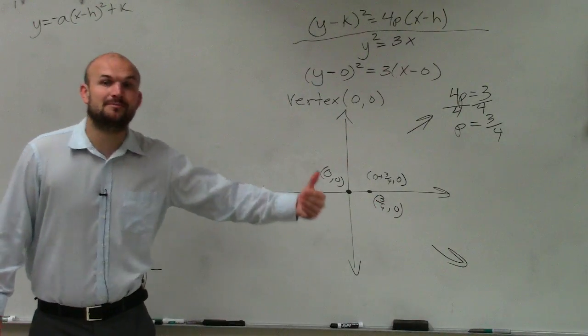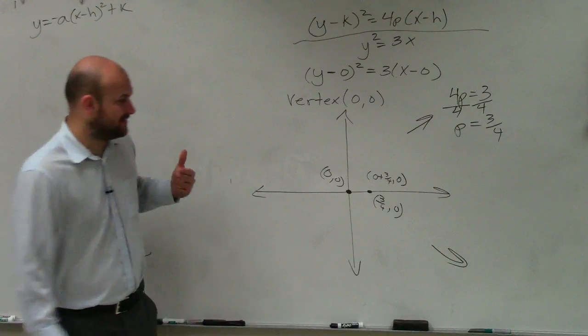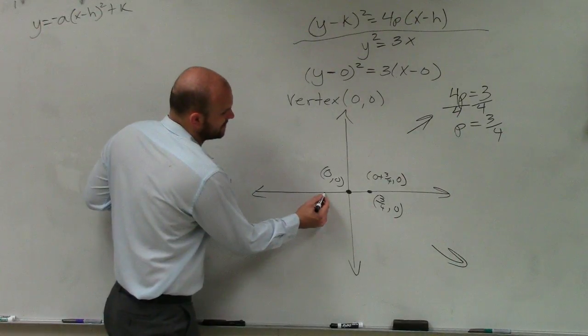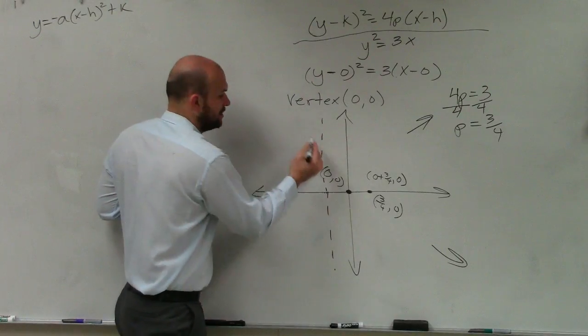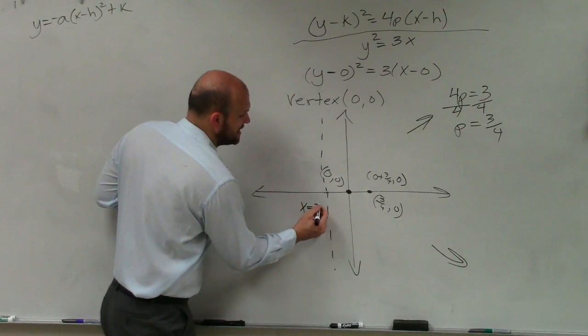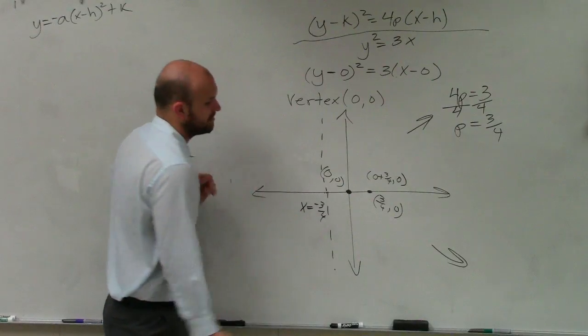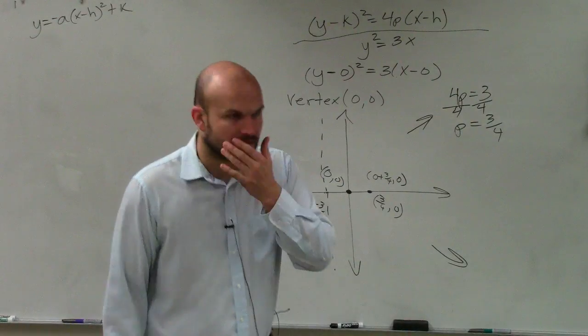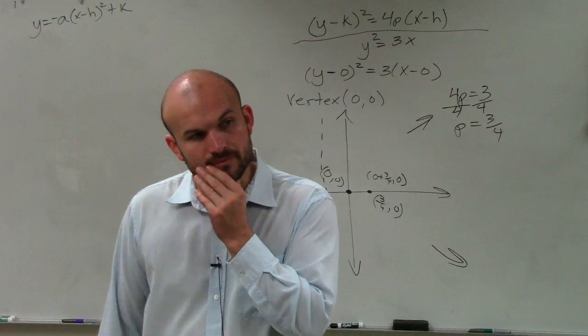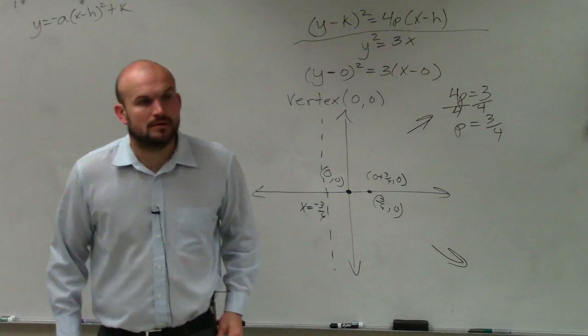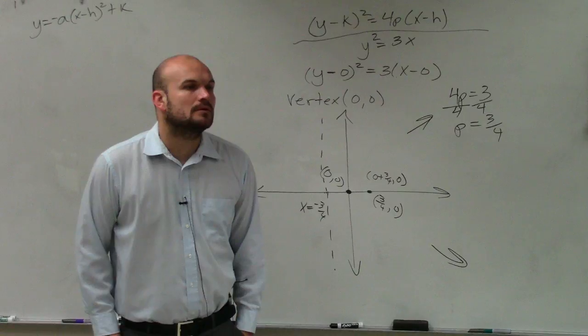And then my directrix, I am going to subtract the p value. So I'll have something like this. And since it's vertical, I can say x equals a negative 3 fourths. Yes, Priscilla? Question?